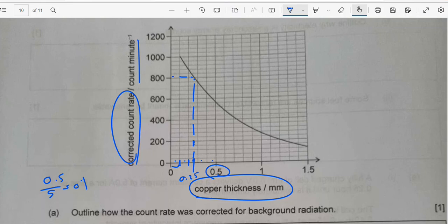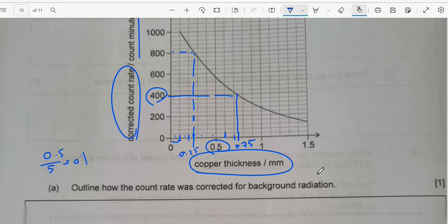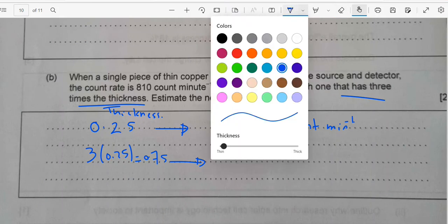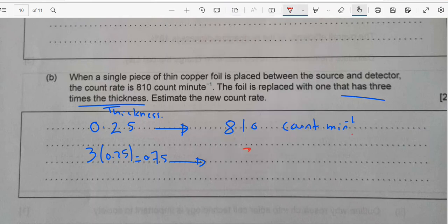This will give you around 810. So 0.75: This is 0.5, 0.6, 0.7. 0.75 will be here. So if you go here, this touches the curve. And read it. It will be less than 400, which is around between 390, 380. So at 0.75, how many count rate? There will be around 380.